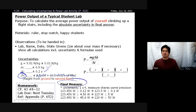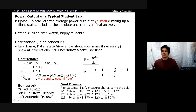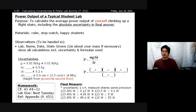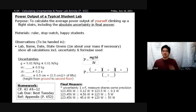Don't forget that your final measurement should be rounded to one significant figure for the uncertainty. For example, if you calculate 123.456 watts plus or minus 0.12 watts, round the uncertainty to one sig fig. In this case it would round to approximately 120 watts plus or minus 50 watts.